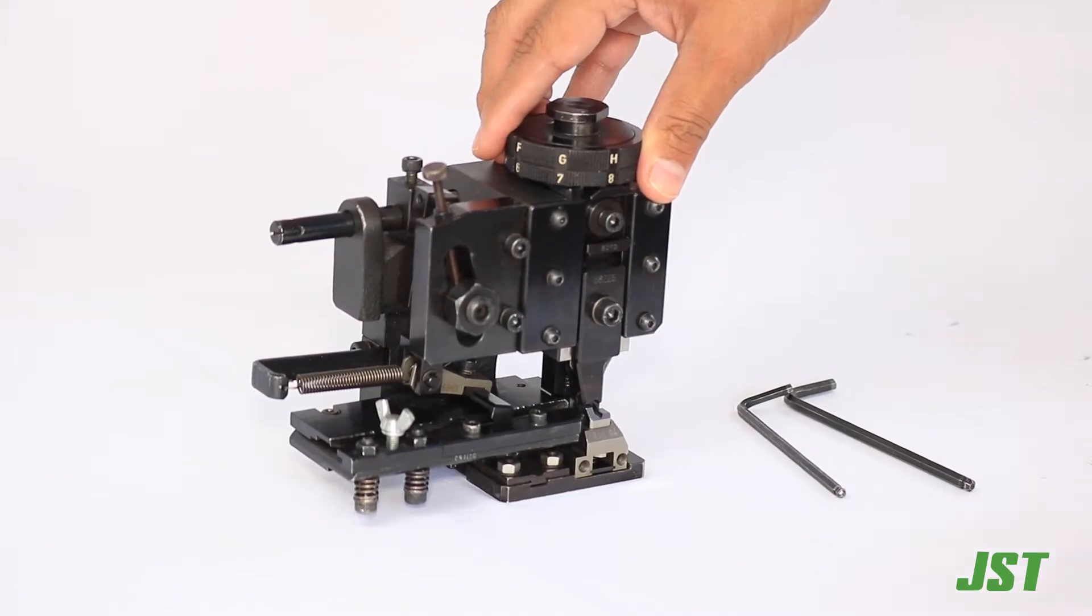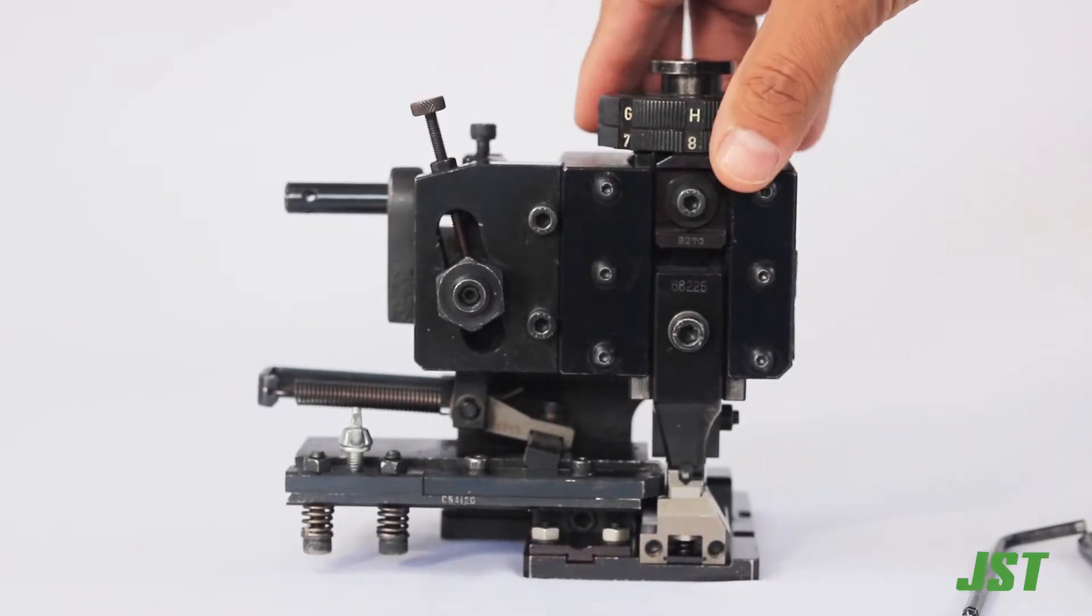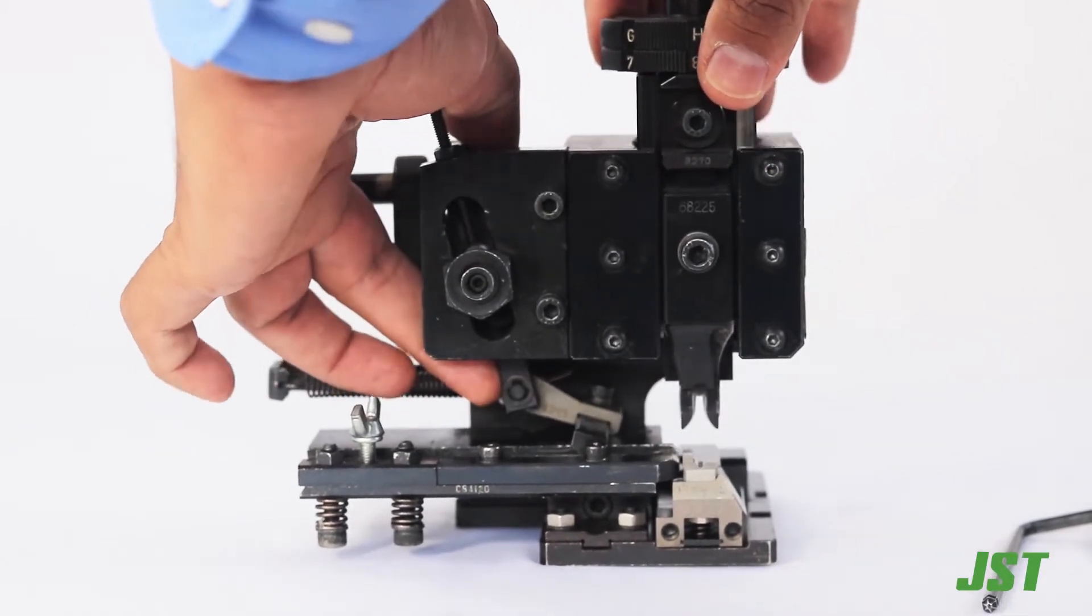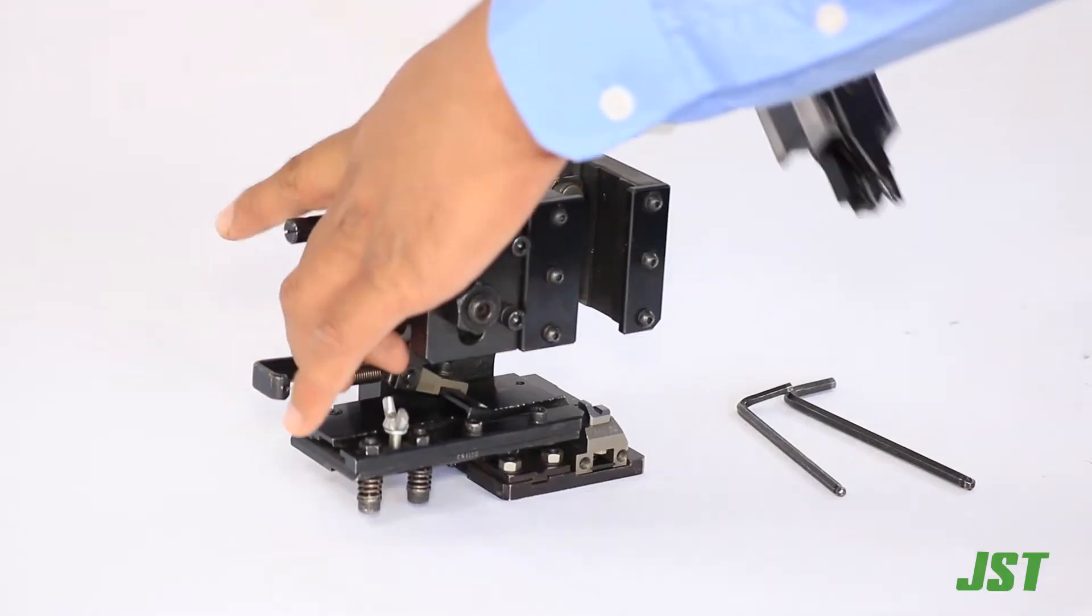For the replacement of a crimper or anvil, we must remove the ram from the applicator by gently pushing the fifth finger facing forward and pulling up the ram.